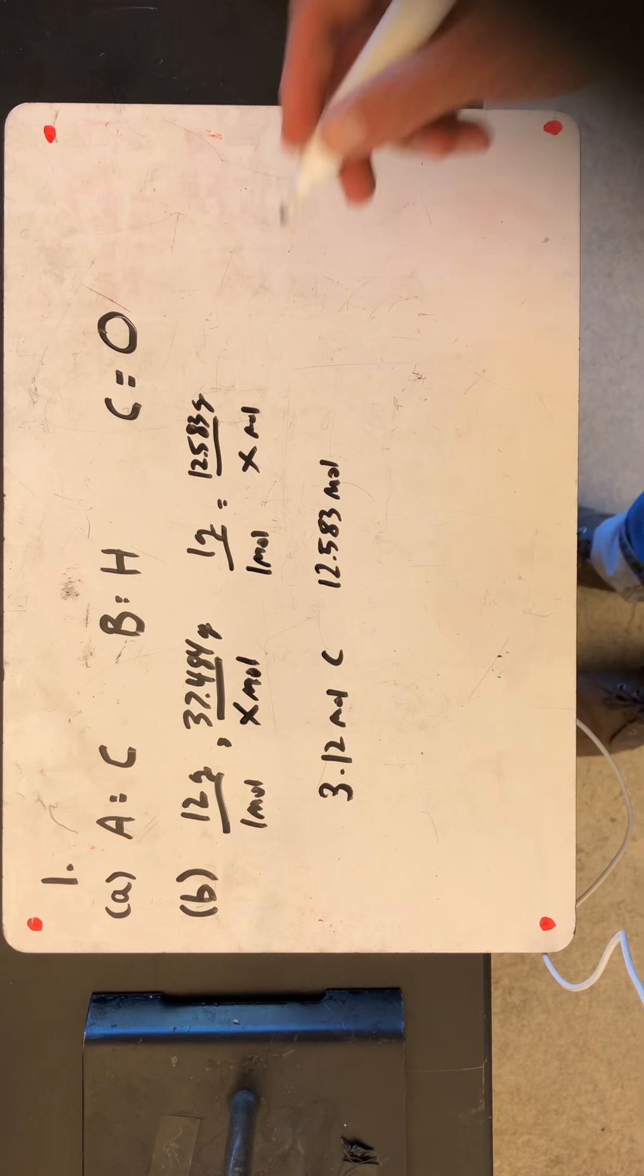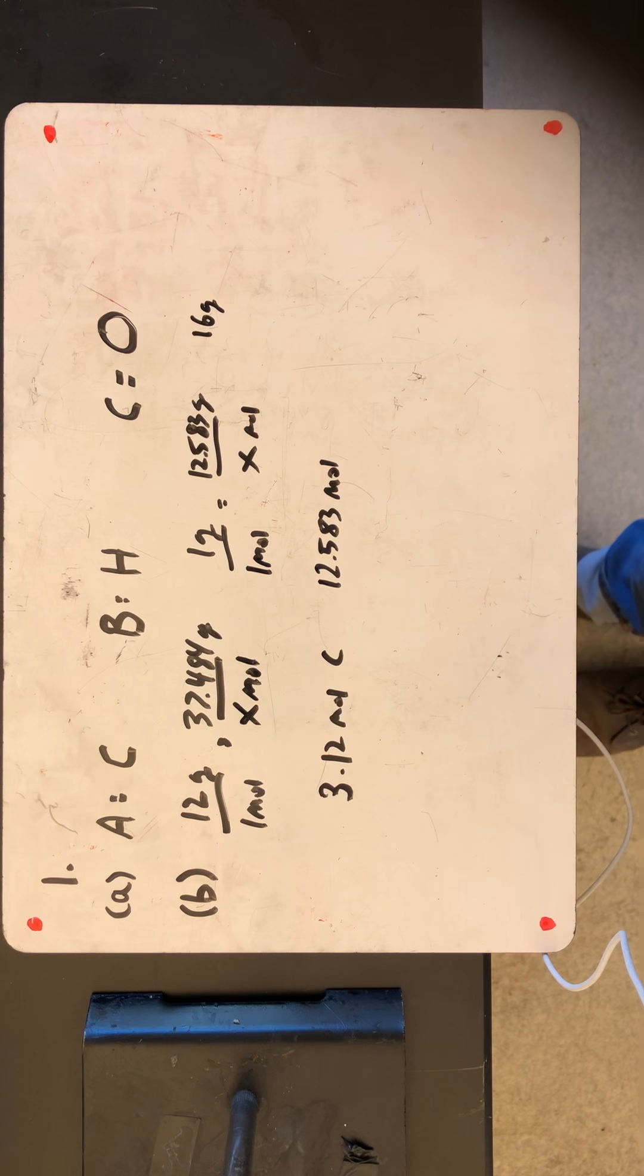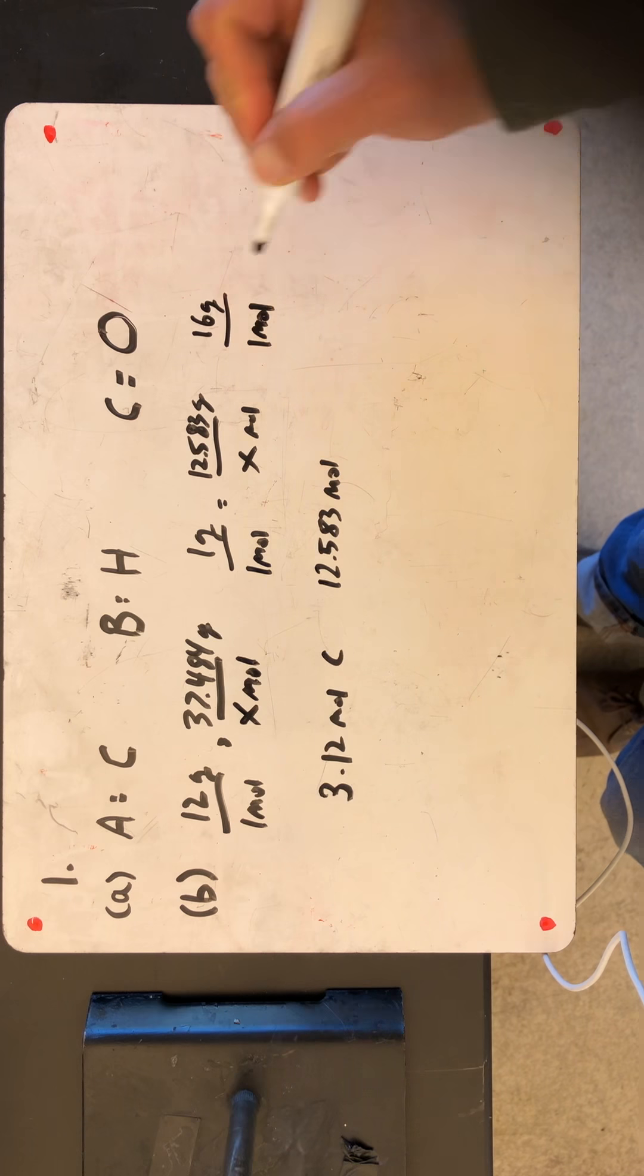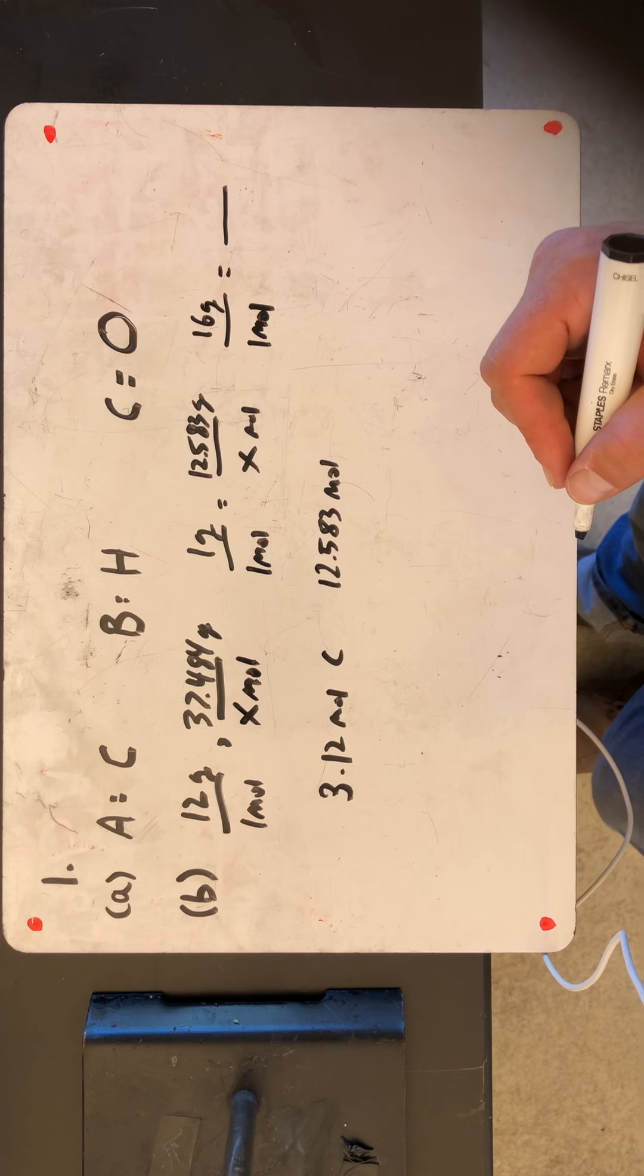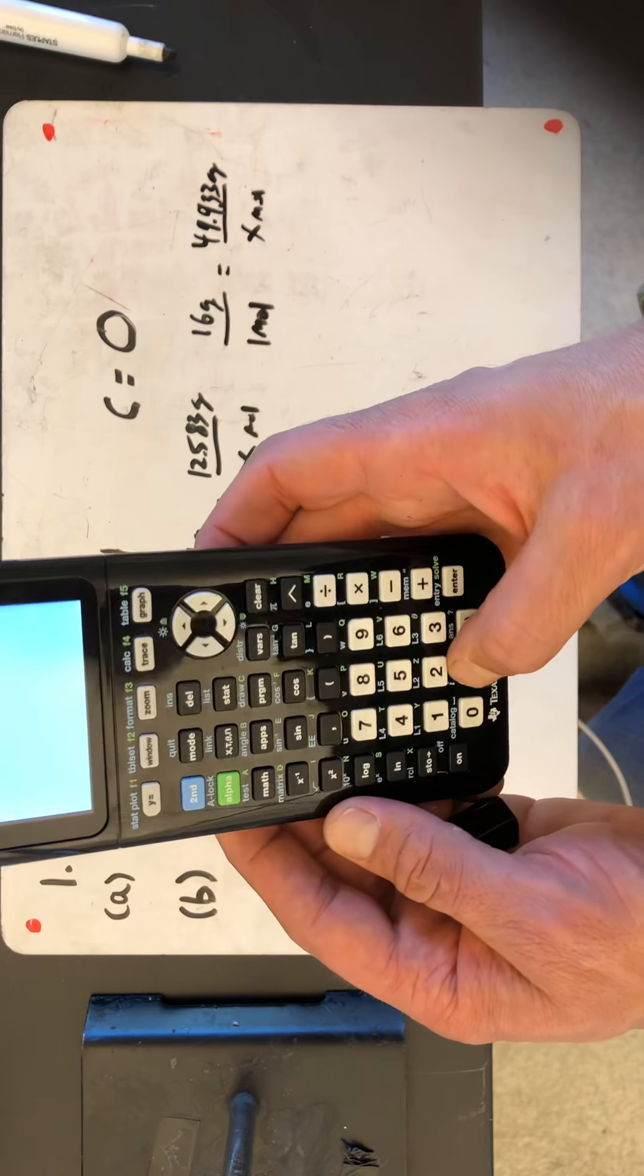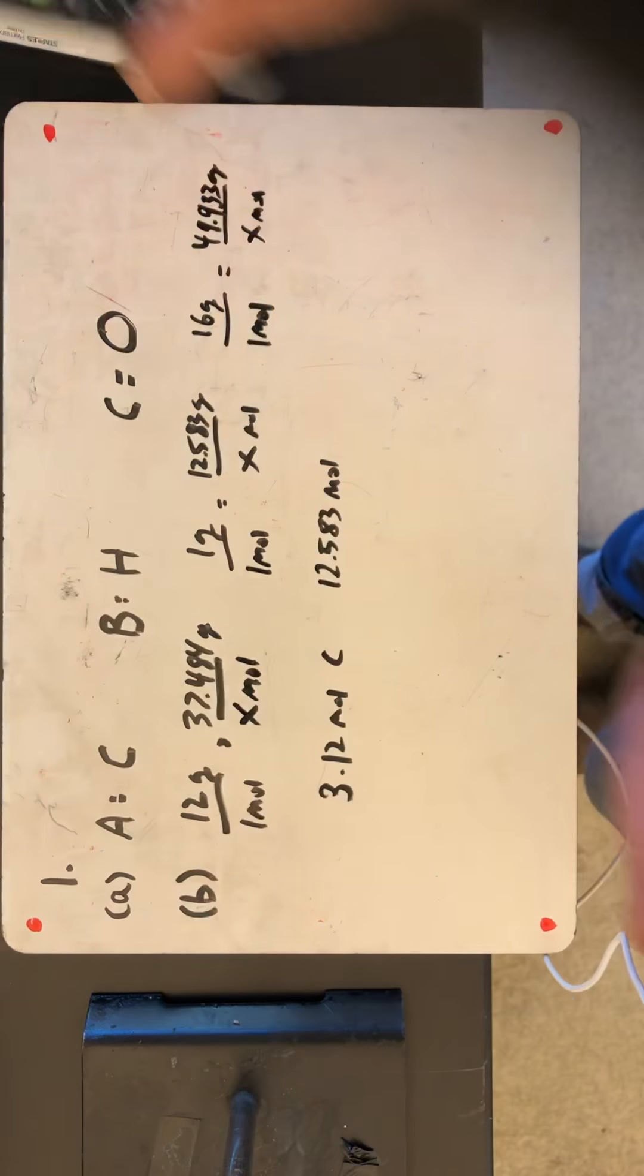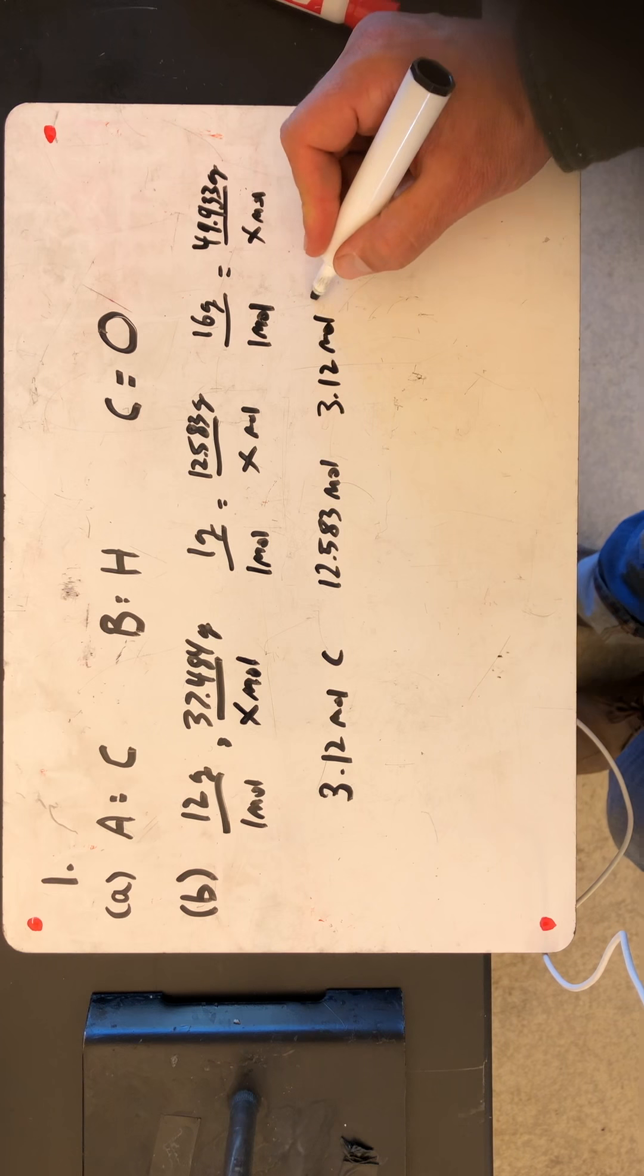And when I go on to the next one, it's for oxygen. I know that oxygen's molar mass is 16 grams per every one mole. And in this case, I have 49.933 grams per every x moles. So I go 49.933 divided by 16, and that's gonna be 3.12. So I have 3.12 moles of oxygen.